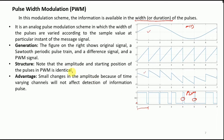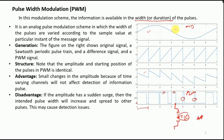A major advantage of PWM over PAM (pulse amplitude modulation) is its robustness to channel distortion. When transmitting through a time-varying channel, any perturbation in amplitude has no effect because amplitude does not store the message information — the width does. Even if amplitude is perturbed by the channel, we can still detect the message signal.